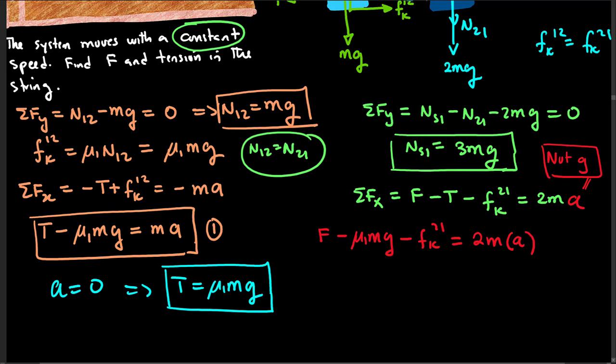So by Newton's third law, Fk12 is equal to Fk21.